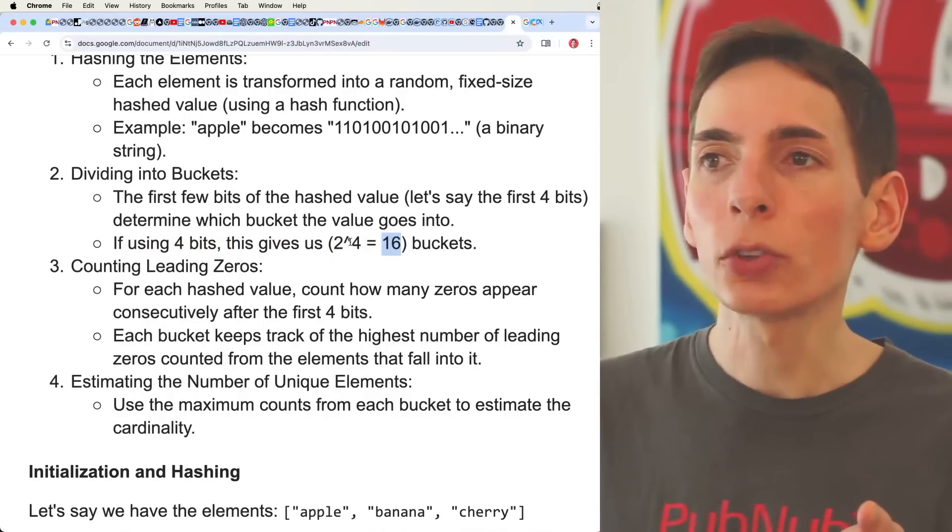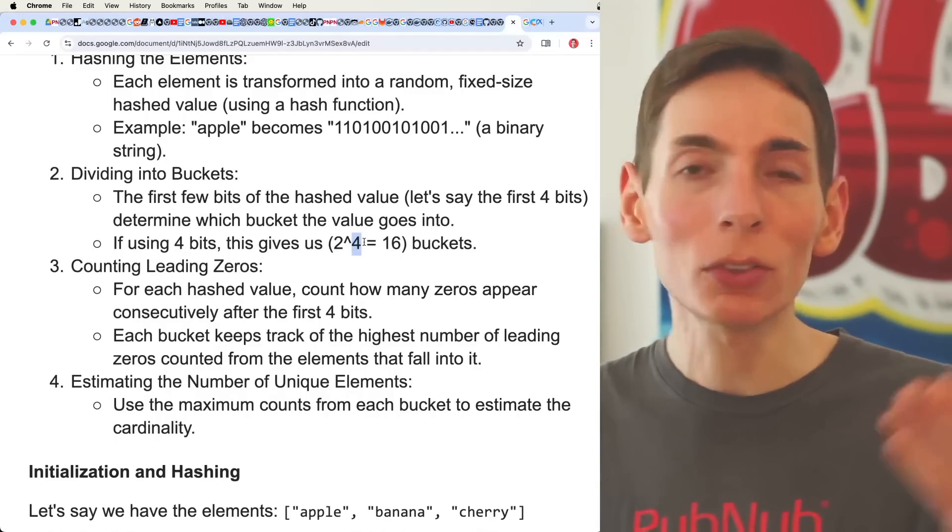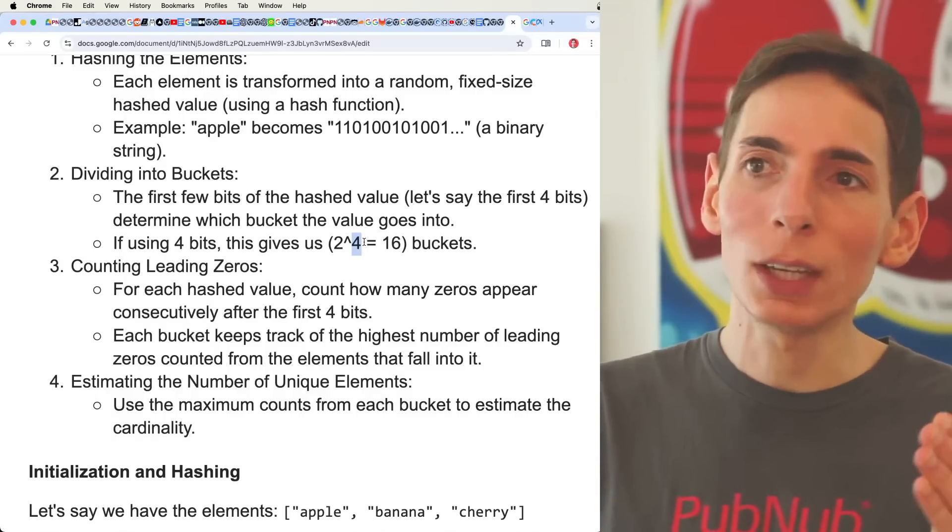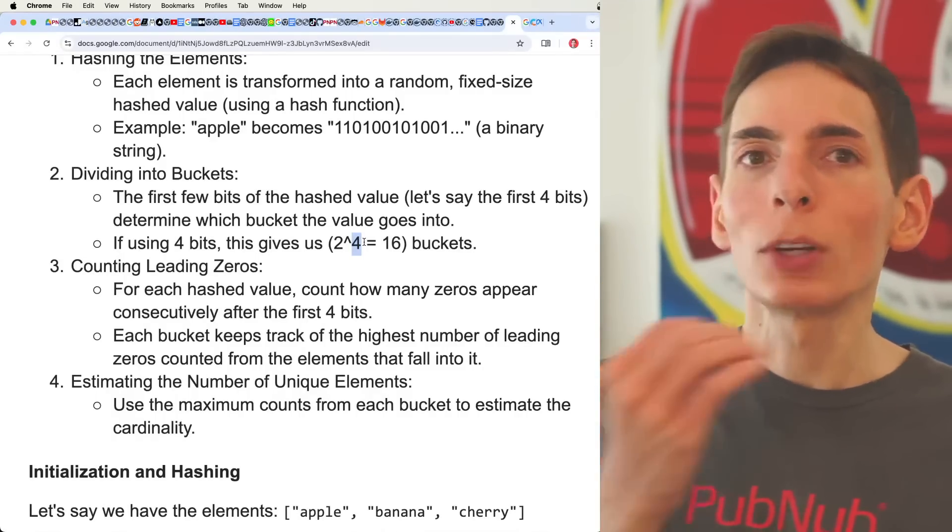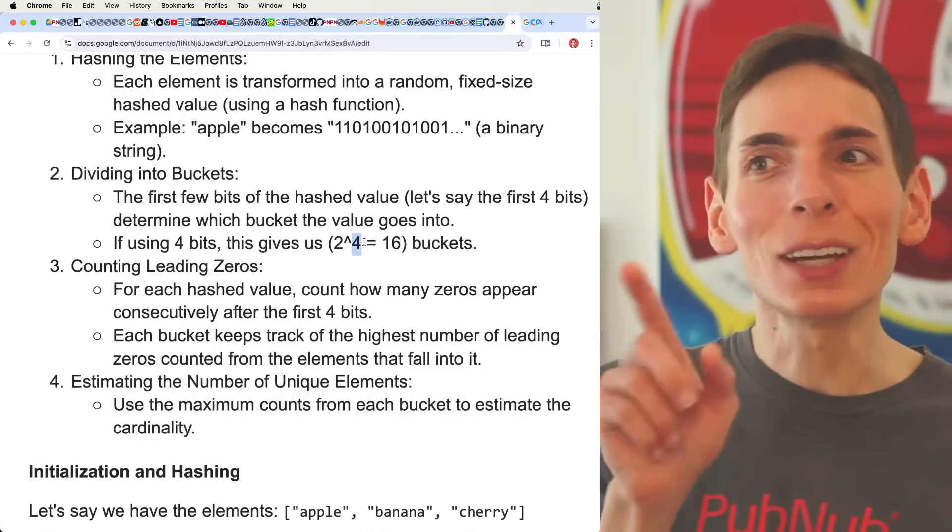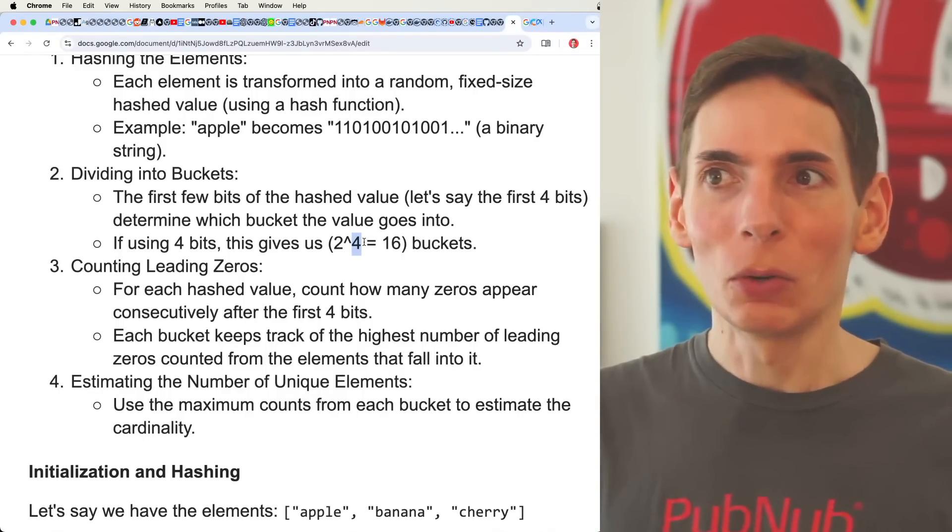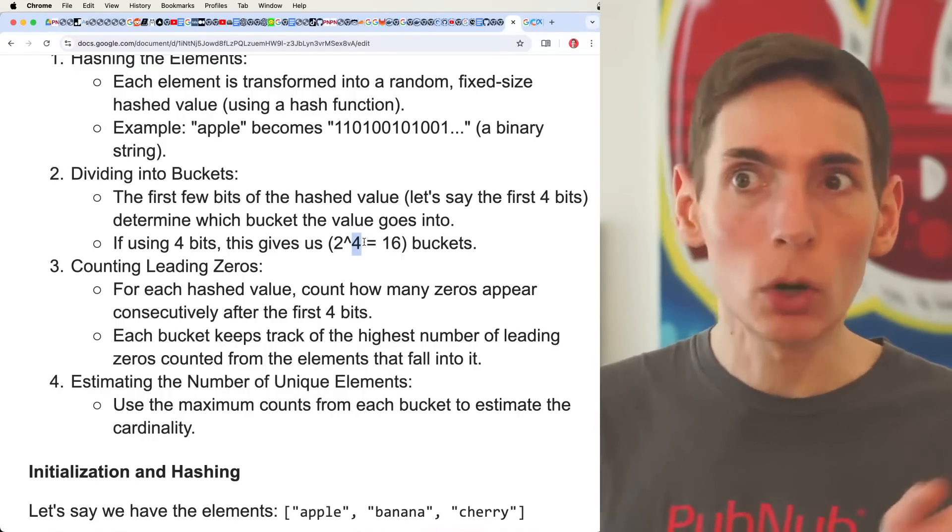Really simple. So you can also increase this number to five bits if you wanted, or six bits, or 10 bits. The more buckets you have, the higher accuracy you get overall at the cost of memory consumption. But it's fine. You can actually have a lot of buckets because this is just an array of integers. So you have plenty of room to grow if you needed.